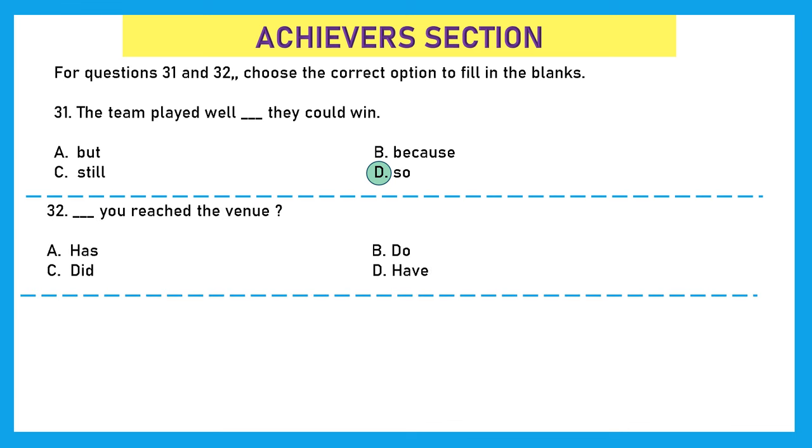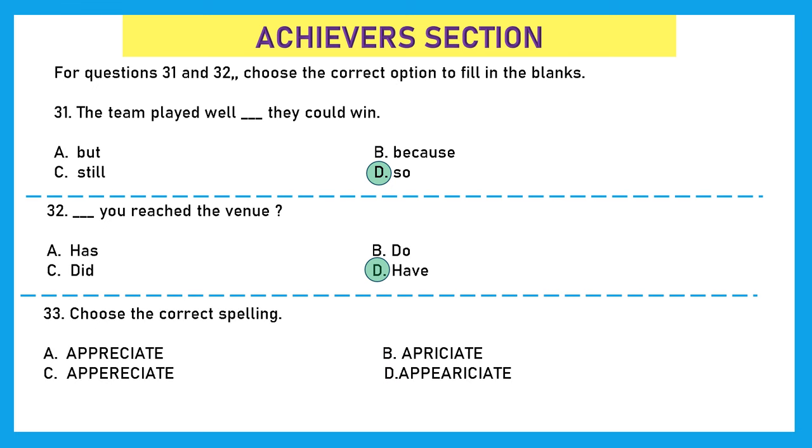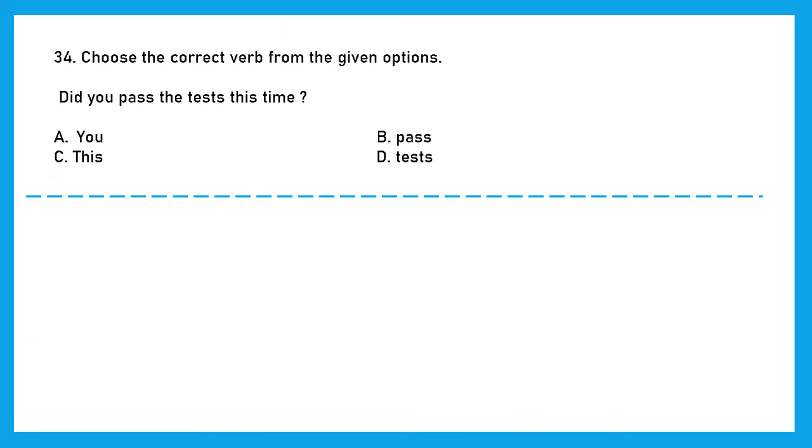Question 32. Blank you reach the venue? Has you reached, do you reached, did you reached, or have you reached. Now here we are going to use option D, have you reached the venue. Question 33. Choose the correct spelling. Here we are talking about appreciate and the right spelling of appreciate is A double P R E C I A T E, which is option A. Question 34. Choose the correct verb from the given options. Did you pass the tests this time? So what is the verb here? The action word here is pass. So our right answer is option B, pass.